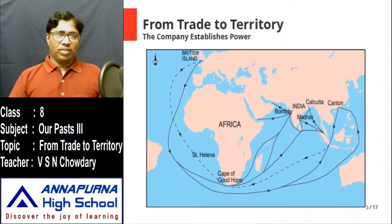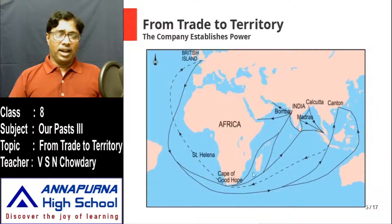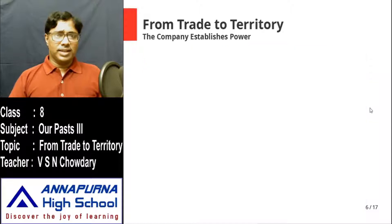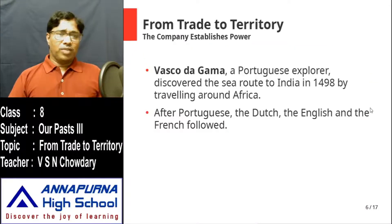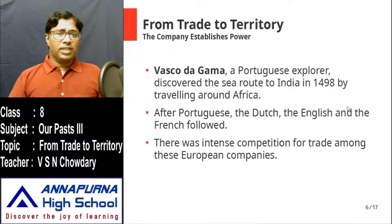Hello children, I hope you read the lesson. Let us do a quick summary of what we learned earlier. We learned that Vasco da Gama discovered a new sea route to India — he traveled around Africa to reach India. Soon this route became so popular that other Europeans started using it. After the Portuguese, the Dutch, the British, and finally the French traders started coming to India for trade, and there was intense competition among all these people.